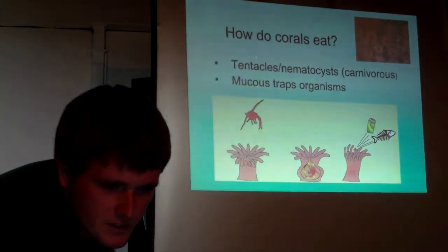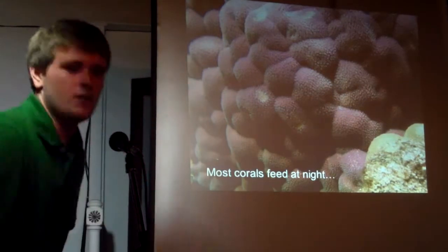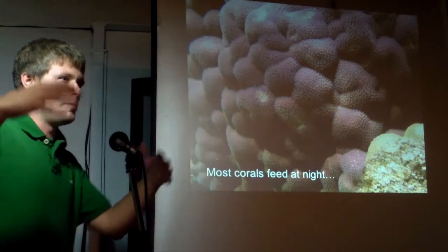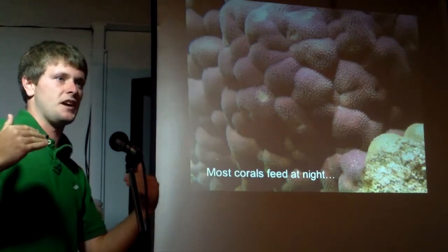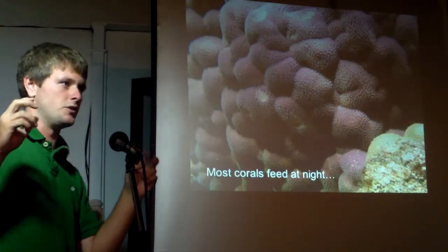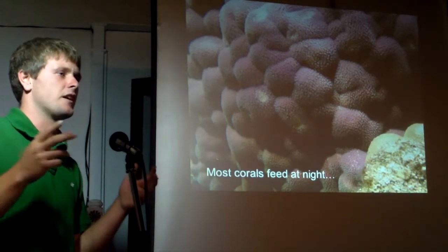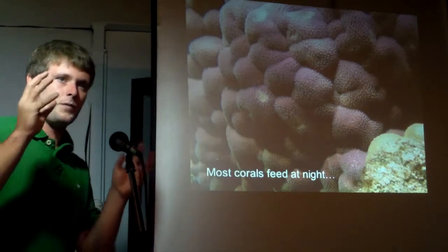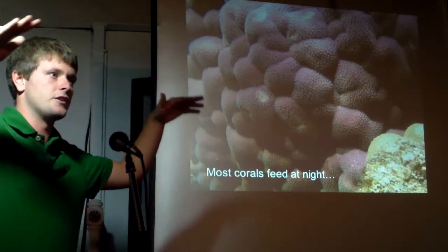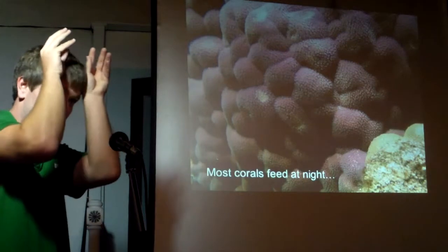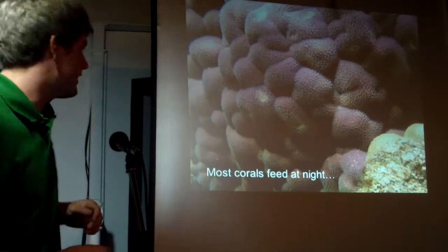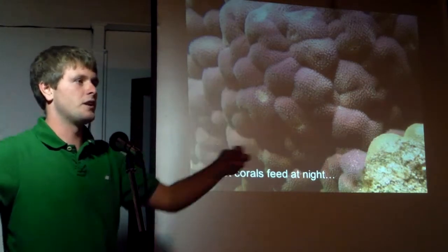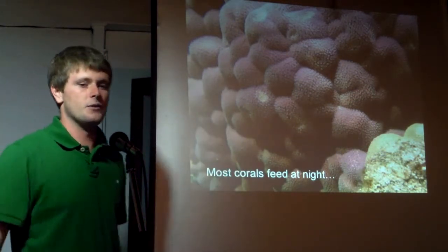Most corals feed at night. When you see them during the day, the polyps are all recessed down in their little holes called calyces — calyx being the singular. All you'll see is just a thin layer of tissue covering the outer surface with the little polyp tucked down inside. But at night, the polyps reach out from the hole and grab whatever plankton they can find floating around in the water.